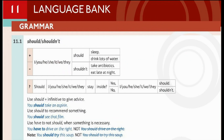Language Bank. Grammar 11.1: Should / Shouldn't. I/You/He/She/It/We/They should sleep. Examples: I should drink lots of water. You should drink lots of water. He/She/It/We/They should drink lots of water.